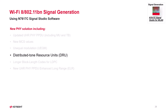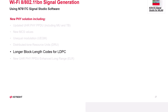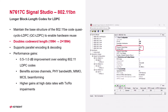Next, let's take a look at longer LDPC block codes. Wi-Fi 8 doubles the LDPC code length for better error correction in low-signal environments. This option is easy to enable in Signal Studio's settings.